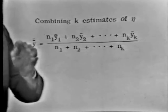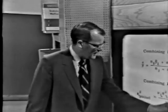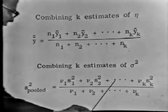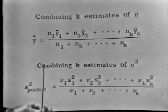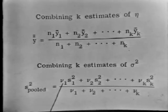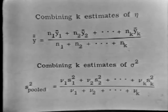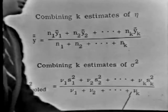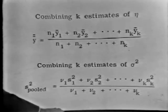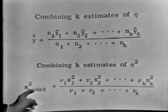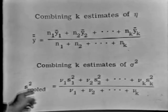To get the best estimate of the variance from a collection of variance estimates, we take the weighted average of the individual estimates, with the weights being the numbers of degrees of freedom. We combine k estimates — s₁², s₂², down to s_k² — by weighting each by its degrees of freedom nu₁, nu₂, etc., summing those products, and dividing by the sum of the degrees of freedom. This gives us s squared pooled — also called the within estimate of the variance.